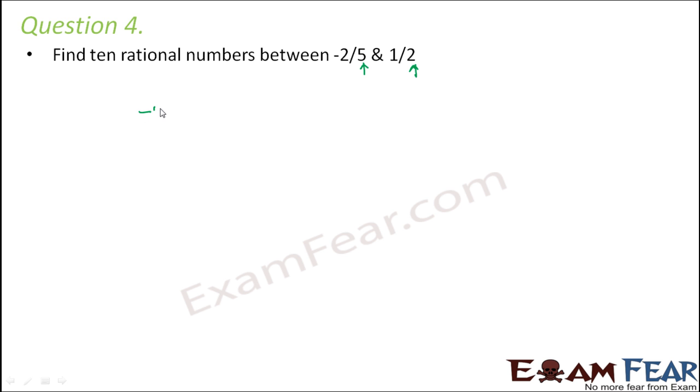So on one side we have -2/5, the other side we have 1/2. Now what is it that if we multiply to the denominator of both, we will get the same denominator? So for example, if we multiply this by 2 and multiply this by 5, what will happen? Both of these will become 10. So my purpose will be solved. So what we do: we multiply both numerator and denominator by 2, so this becomes -4/10. Similarly here also we multiply both numerator and denominator by 5, so we get 5/10.